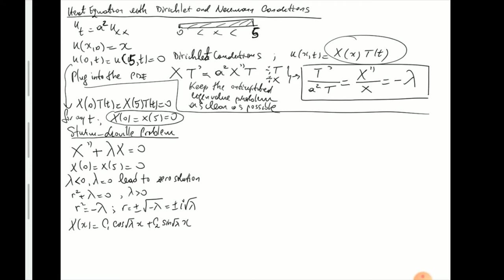Very similar to the [0,π] case. Let's impose the boundary conditions. When I do X(0) = 0, that gives me C₁·cos(0) + C₂·sin(0) = 0. Sine of 0 is 0, cosine of 0 is 1, so this condition gives me C₁ = 0. When we move to the second boundary condition, we can cut the first piece since C₁ is already zero. So now we're looking at X(5) = 0. That means C₂·sin(√λ · 5) = 0. Pay close attention here — this is the moment when we find the eigenvalues.